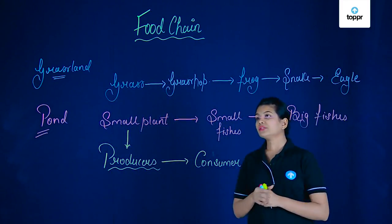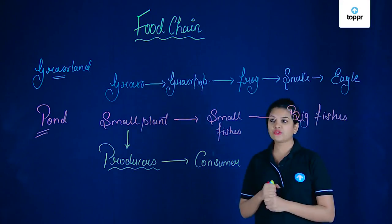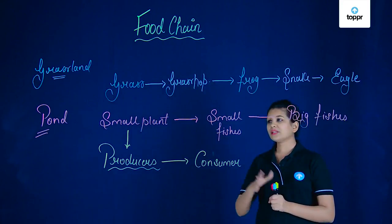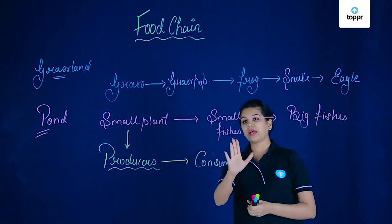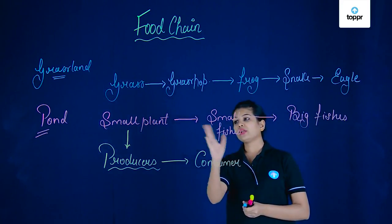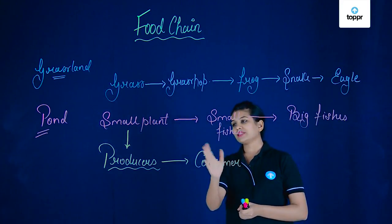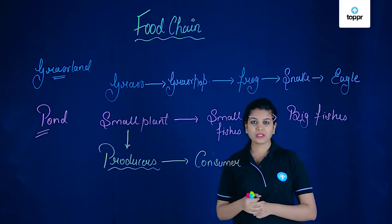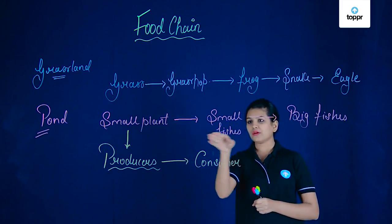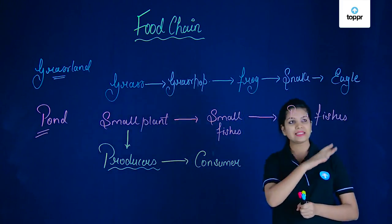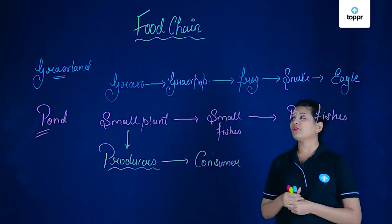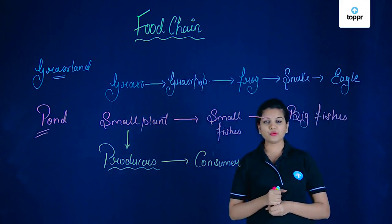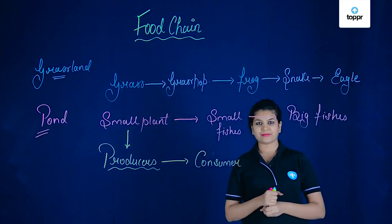This was about the food chain, in which you have observed how an animal or an organism feeds upon the other one, and this is how this series of events takes place which we call a food chain.